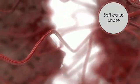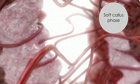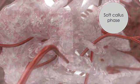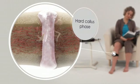In the subsequent soft callus phase, a fibrous matrix replaces the dead and damaged tissue. Cartilaginous material forms in the fracture gap and bone grows at the edges of the callus.